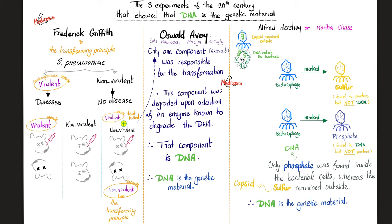The non-virulent had transformed into virulent: the uncapsulated became capsulated, the non-disease-causing became disease-causing, the rough became smooth — because it acquired a smooth polysaccharide capsule. They kept isolating many components until they found that only one component was responsible for the transformation. They discovered that this component was degraded when you add an enzyme that degrades DNA. Therefore, this component is DNA, and DNA is the genetic material.